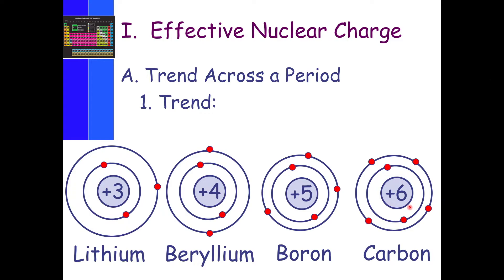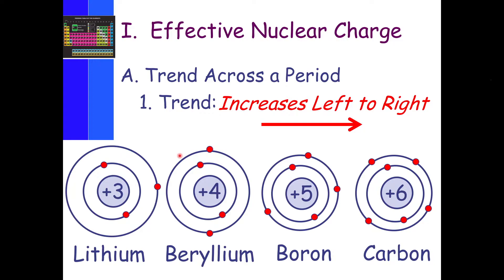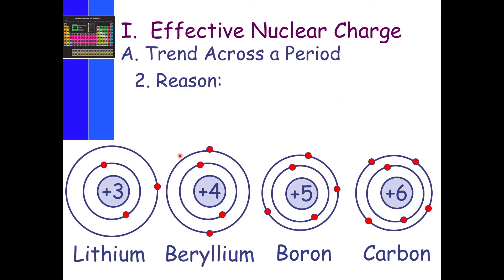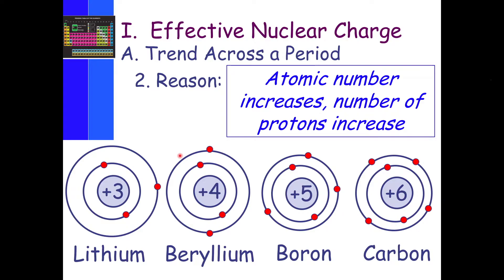The trend across the period is: as we go from left to right — lithium, beryllium, boron, and carbon, elements three through six — the effective nuclear charge will increase from left to right. The reason is because we're increasing the atomic number, and so we're increasing the number of protons.